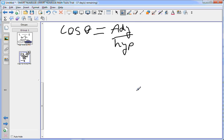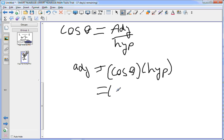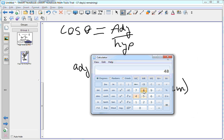Solving for adjacent we get adjacent equals cos theta times hypotenuse equals cos 48 degrees times 9.0 centimeters equals 48 degrees cos that is 0.6691.